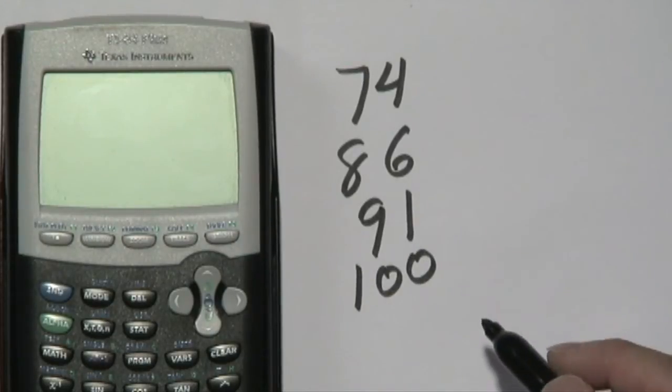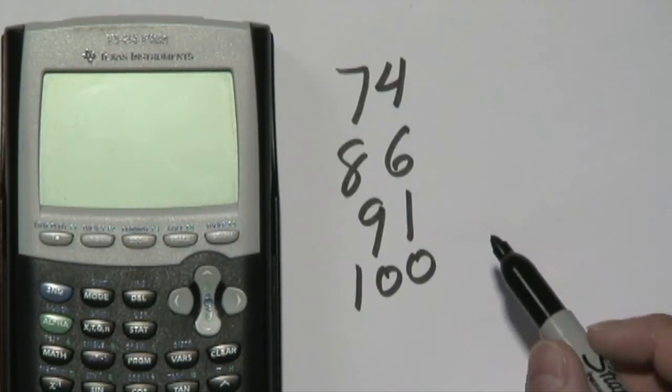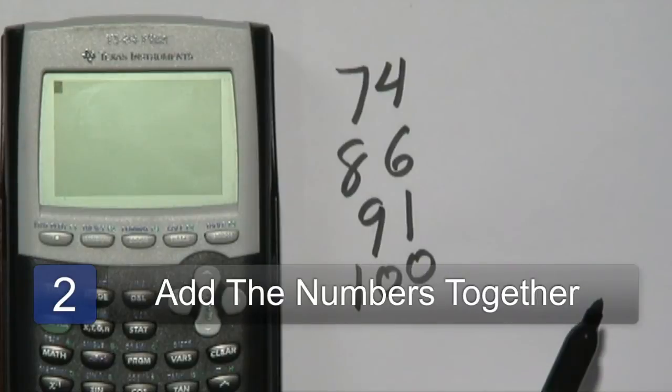And let's just say you want to find the average. Well, finding the average is exactly like finding the mean because the mean is the average. So what you want to do is a very simple process. On any calculator, or you can do it by hand certainly, you want to add all of these numbers together.